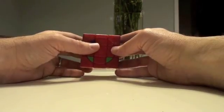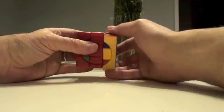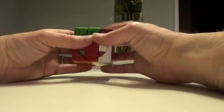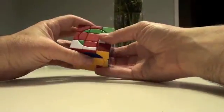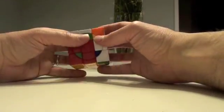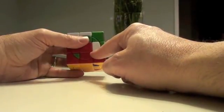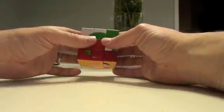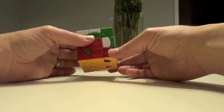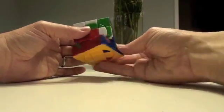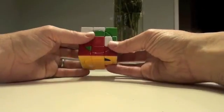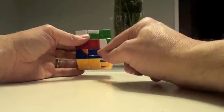So that algorithm is going to be R, Ui, Ri, F, Ri, Fi, R. So you can see we brought it here. We then have a choice to do any of these D configurations. It could be any one. It could be D prime, it could be D, it could be 2D. For the sake of convenience, we're just going to do D.